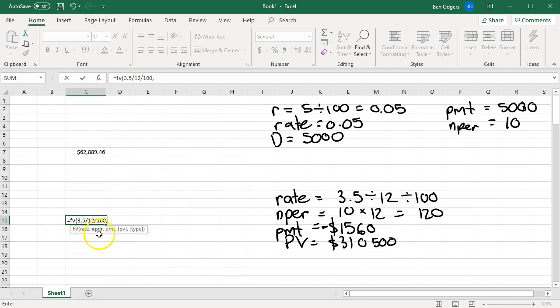Comma. Next, we need to put the number of time periods, which is 120. Comma. Then our repayment, which is negative 1,560. And then our present value, which is 310,500. Comma. Now for the type, for now I'm just going to put a zero down. I'm going to close my brackets and press enter.